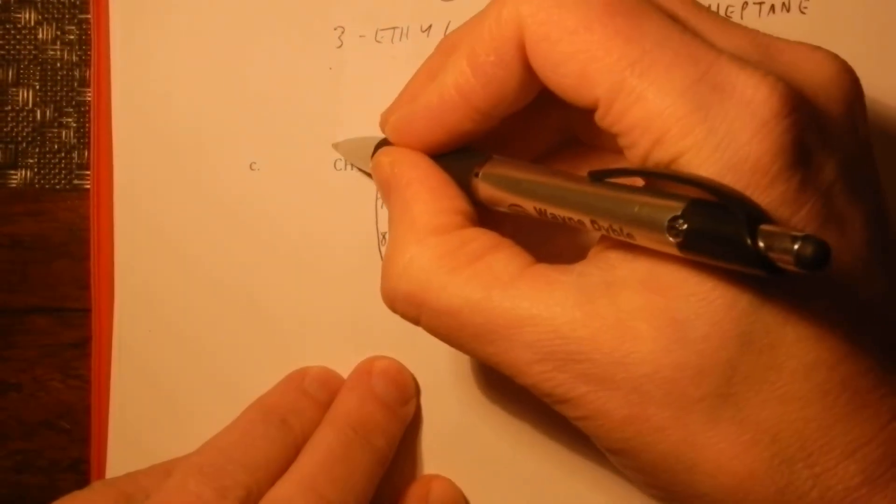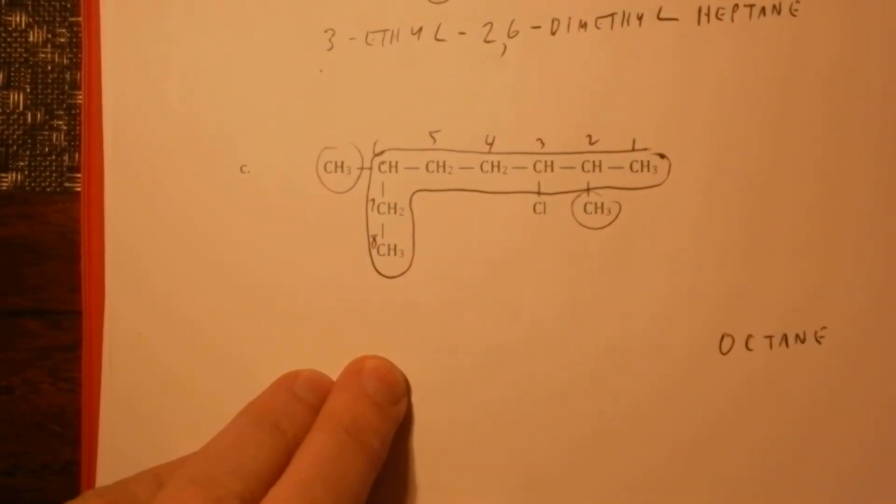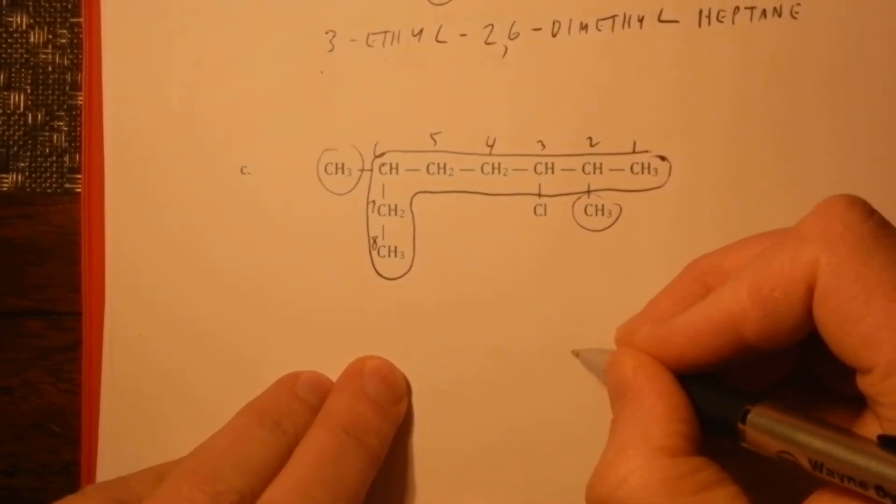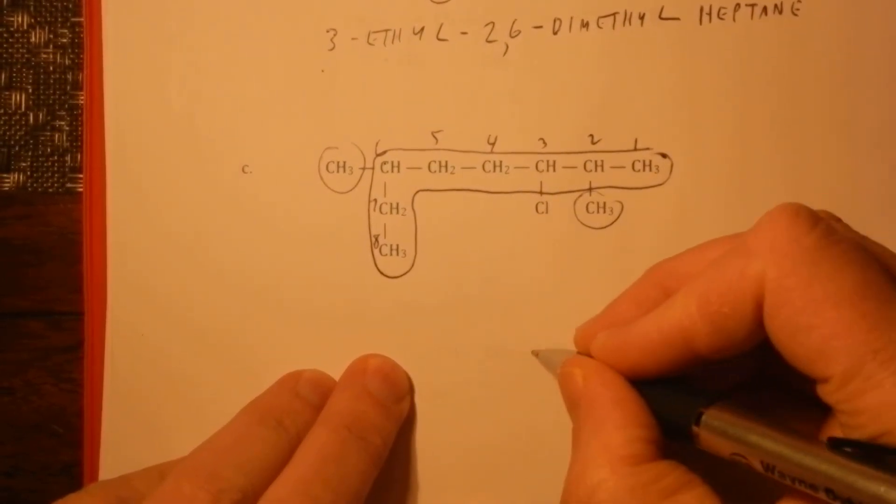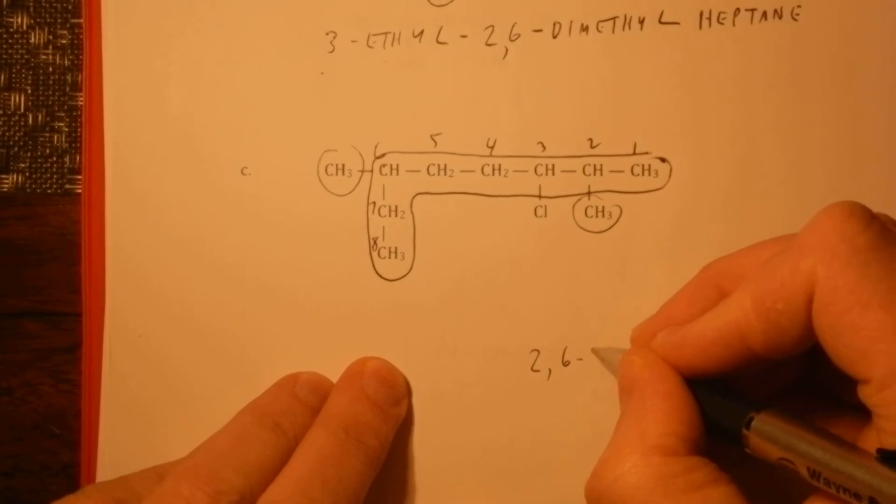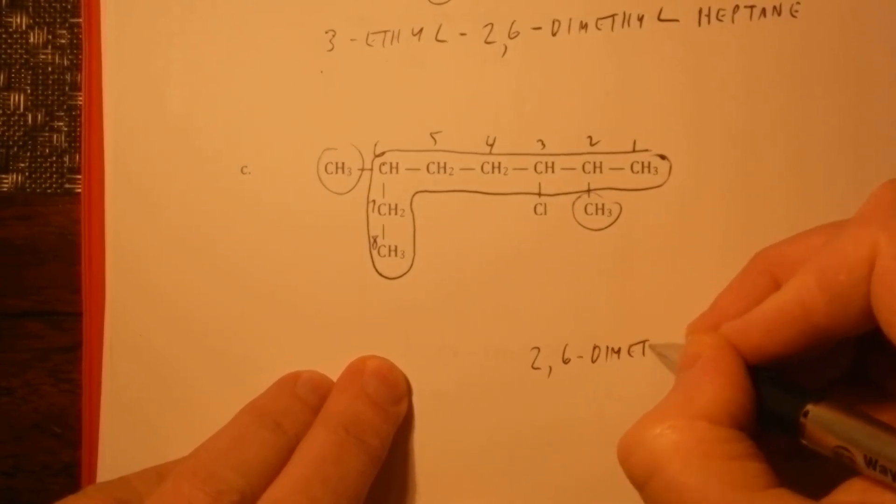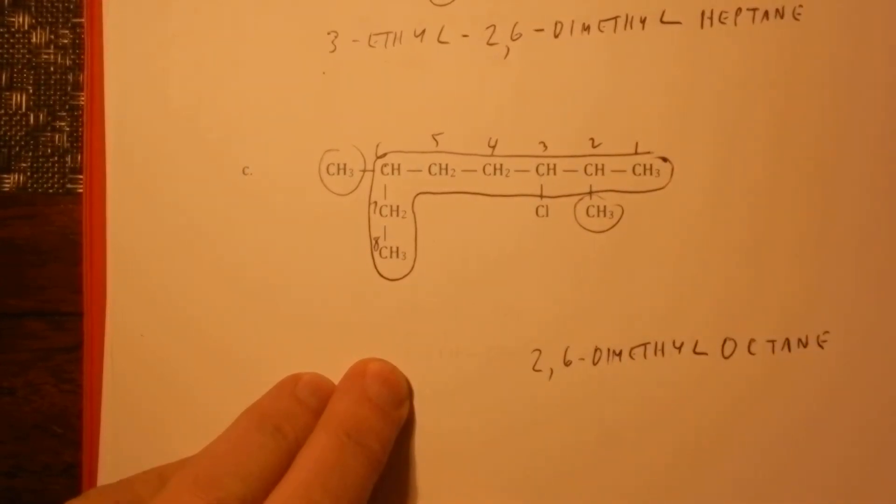And I can see I have a methyl there and another methyl there. And so I will have a 2,6-dimethyl octane.